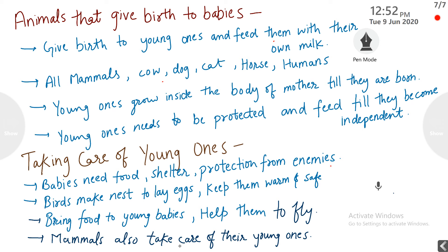Animals that give birth to babies. Animals that give birth to young ones and feed them with their own milk — this category includes most of the mammals. The main characteristic of mammals is that they give birth to babies and those babies feed on the mother's milk. So all mammals such as cow, dog, cat, horse, human beings, and goat all give birth to babies.